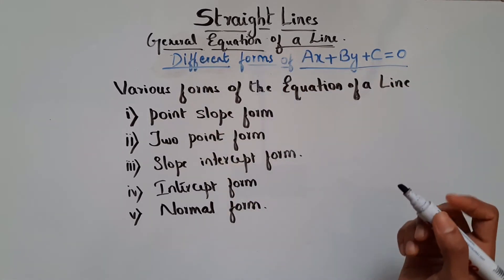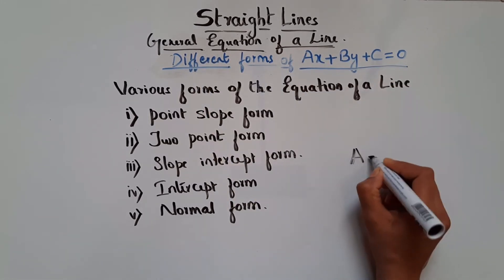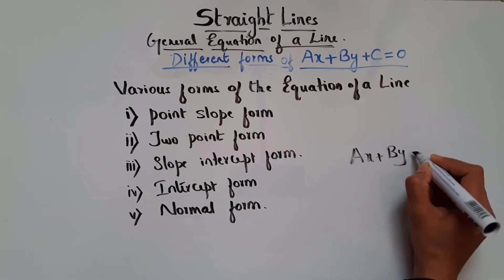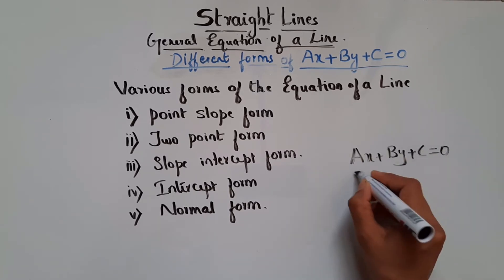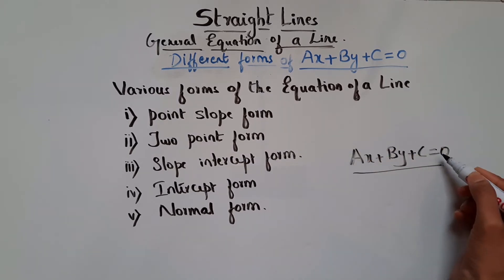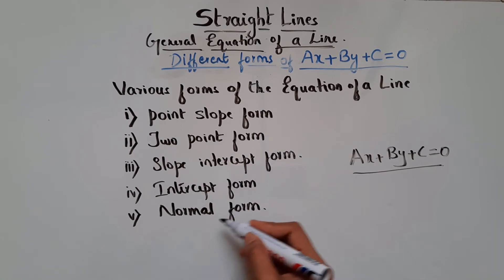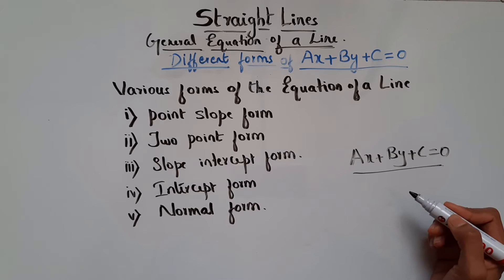The general equation of a straight line is AX plus BY plus C equal to 0. When the equation of the line is given, we will use slope-intercept form, intercept form, and normal form to find the parameters. That is what we are going to see in this video.